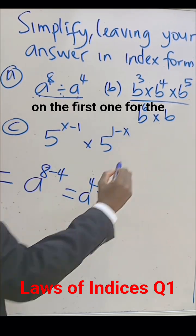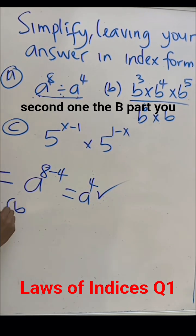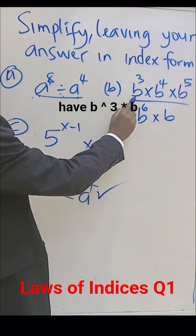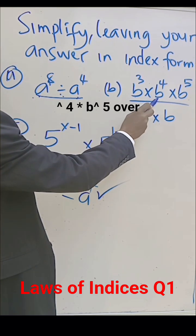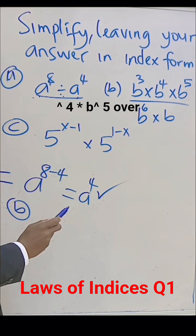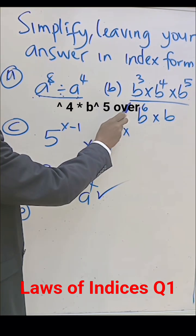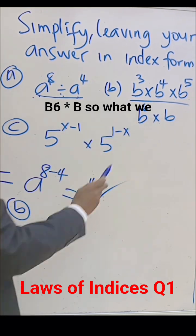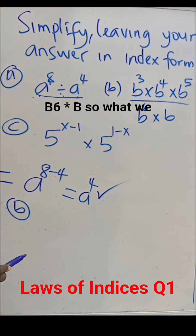And that's that on the first one. For the second one, the B part, you have B to power 3 times B to power 4 times B to power 5 over B to power 6 times B. So, what we do in this case: